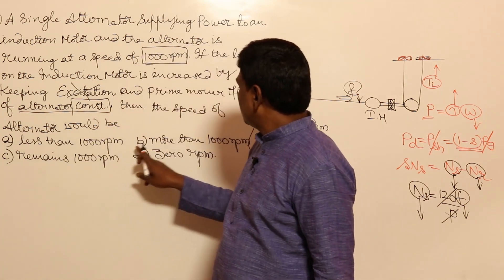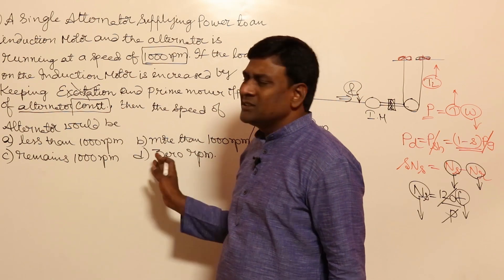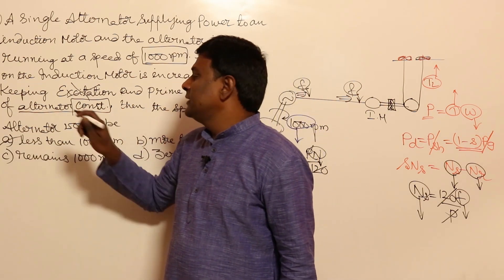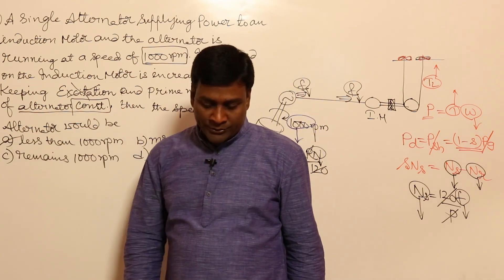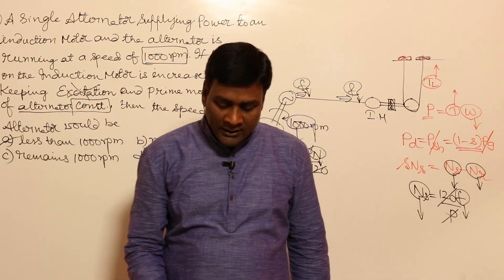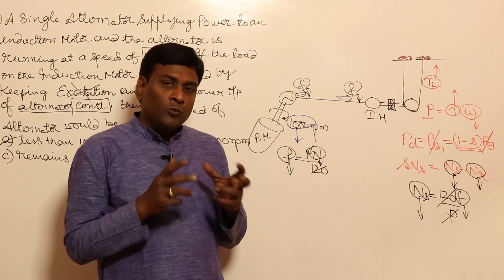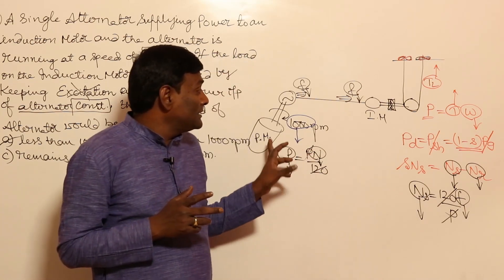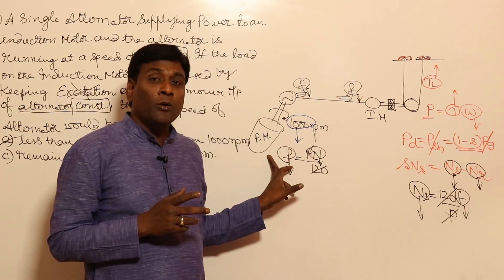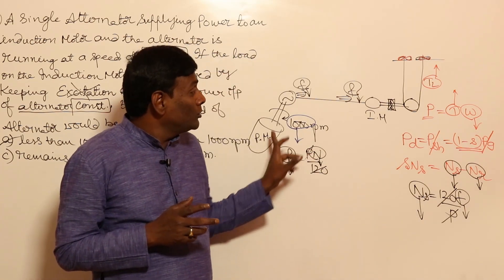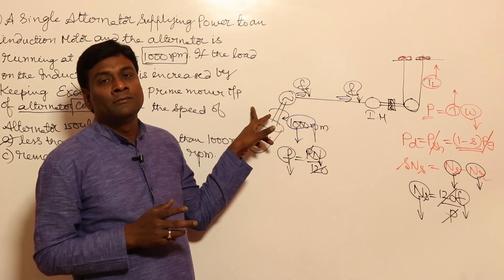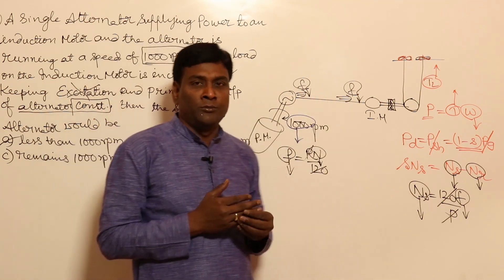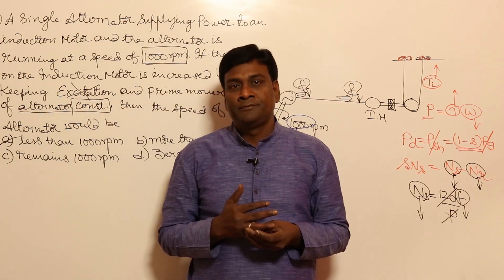Since frequency equals N times P divided by 120, and poles are constant, a reduced output frequency means the alternator speed must be reduced to less than 1000 rpm. So the answer is less than 1000 rpm. This problem beautifully combines both induction motor and alternator concepts.